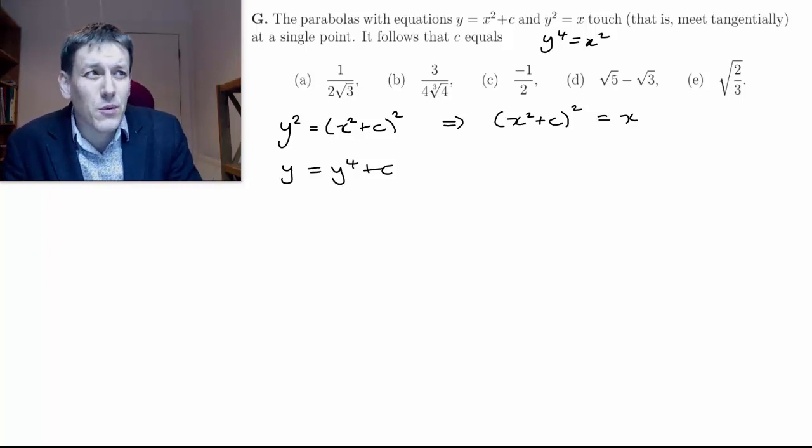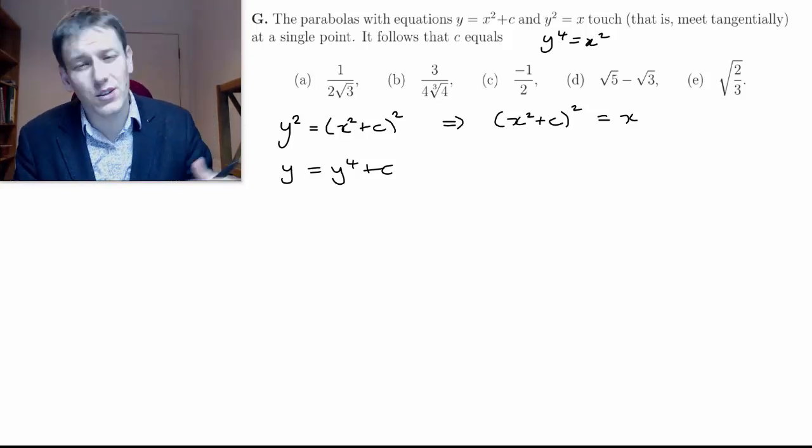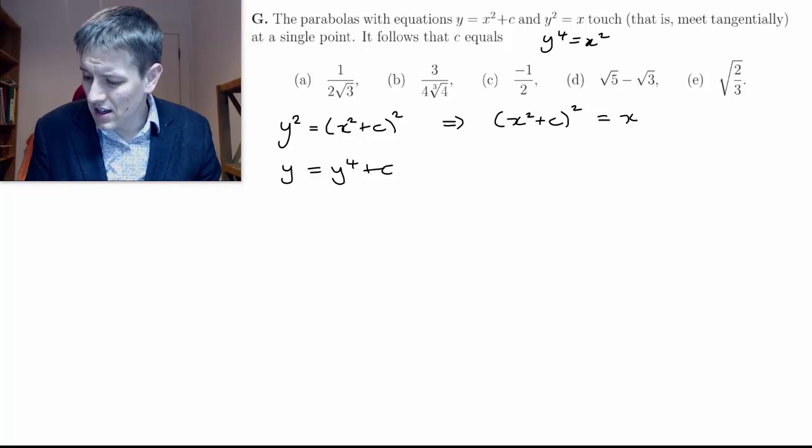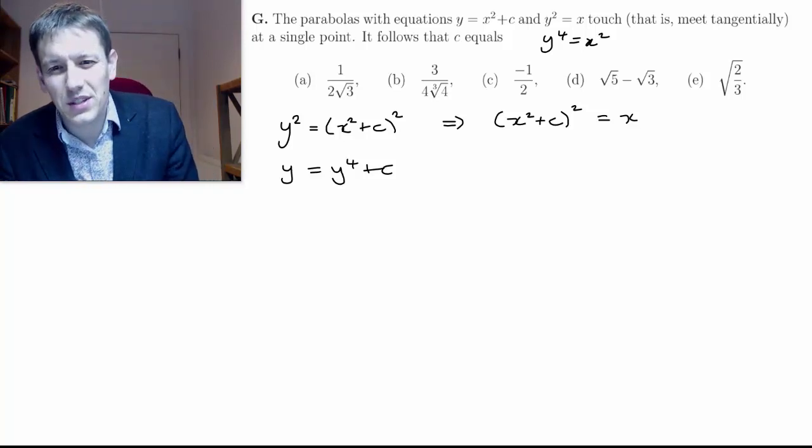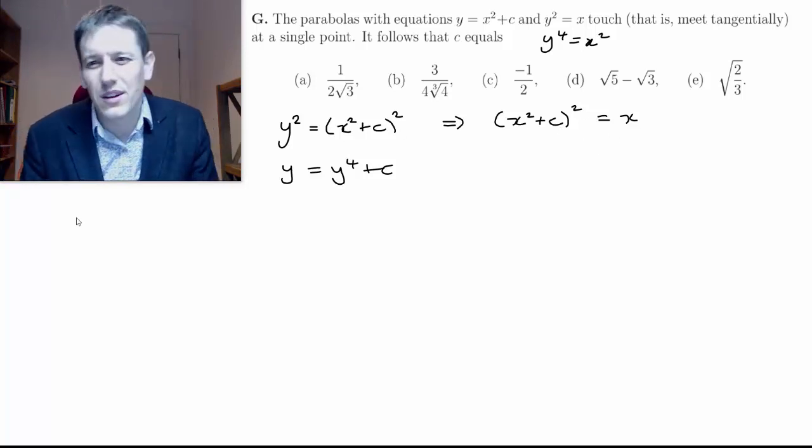But that works very nicely when the object is a quadratic or a disguised quadratic—you can just say the discriminant is equal to zero or something like that. But here we've got these quartics that also have linear terms in them, so they're not going to have that nice structure.